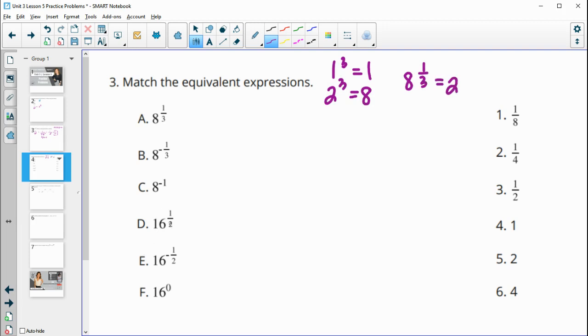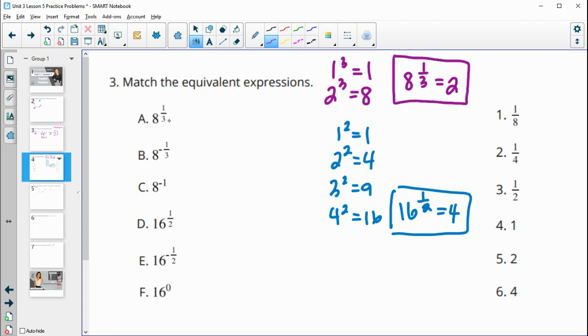Then we also see 16 to the 1 half. So if we look at some squared numbers here to help us. So 1 squared is 1. 2 squared is 4. 3 squared is 9. And 4 squared is 16, which we kind of see here. So that means that 16 to the 1 half power is 4. So let's just kind of keep these two things in our back pocket as we're doing these problems to help us. So that means that 8 to the 1 3rd power is 2. So we see that here at number 5. So this one is number 5.